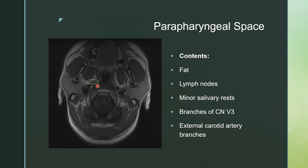What we really use the parapharyngeal space for is to figure out a lesion that's in a different area that's displacing that parapharyngeal fat. When you have a mass in the masticator space, it is going to displace that fat posteromedially. When you have a mass in the parotid space, it's going to displace that fat medially. When you have a mass in the carotid space, it's going to displace that fat anteromedially. And when you have a lesion in the primary pharyngeal space, it's going to displace that fat laterally. So the direction in which that fat is moved and compressed can give you a good idea of where a lesion is coming from so you can provide a better differential diagnosis.